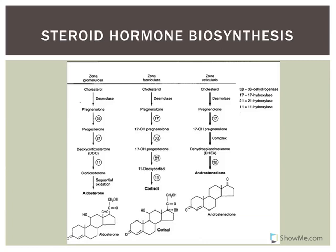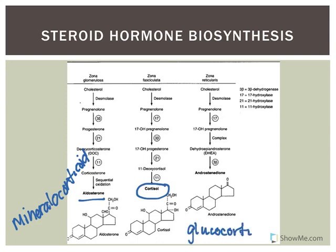The zona glomerulosa produces the primary hormone aldosterone, which is classified as a mineralocorticoid. The zona fasciculata produces cortisol, which is a glucocorticoid. The zona reticularis produces DHEA (dehydroepiandrosterone) and androstenedione — these are androgens, or male sex hormones.